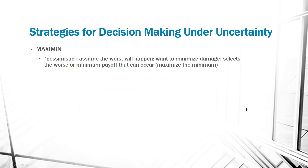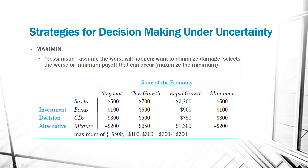MaxiMin is the pessimistic side — you assume the worst is going to happen and want to minimize the damage. You select the worst or minimum payoff that can occur for each alternative. Looking at each row, the minimum values are negative 500, negative 100, and 300. They happen to all be in the same column here, but they don't always have to be. To maximize the minimum, you find the maximum of those, which is $300 — so if you're very pessimistic, you'd probably just do CDs.